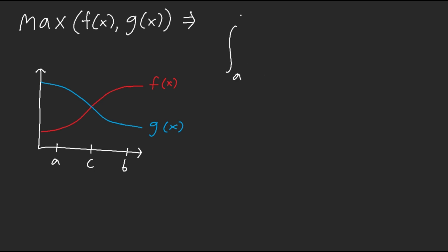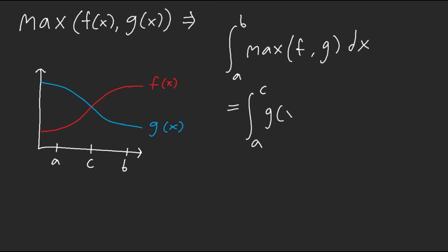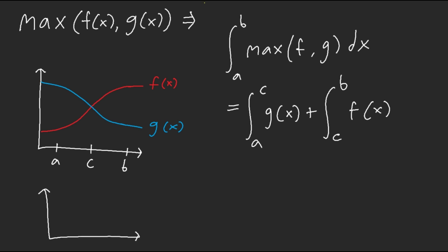When we integrate from A to B the max of f, g dx, we compute this as a piecewise function. We split the interval at C. Between A and C, g(x) is the maximum so we integrate g(x). Between C and B, f(x) is the maximum. The max function literally looks like a piecewise function.